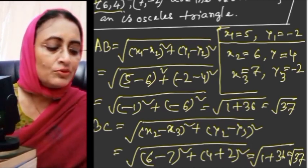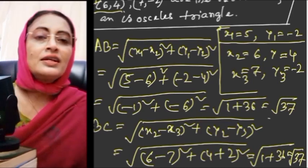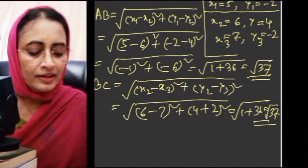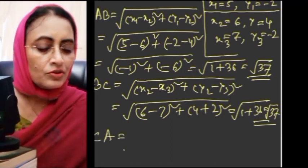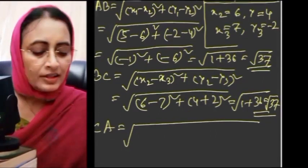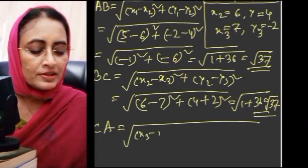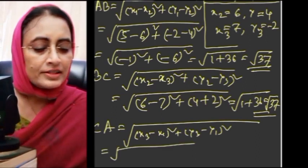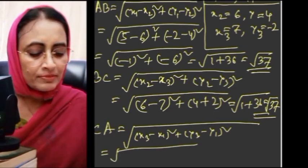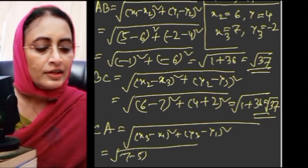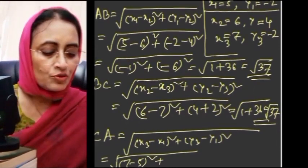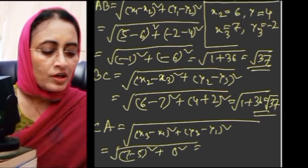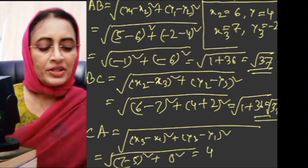CA = √[(x3 - x1)² + (y3 - y1)²] = √[(7 - 5)² + (-2 - (-2))²] = √[(2)² + (0)²] = √4 = 2.